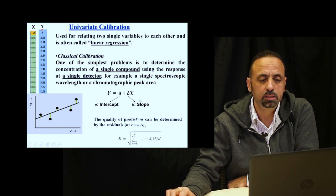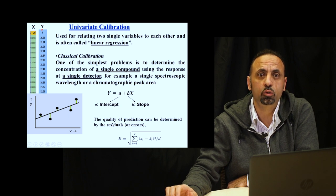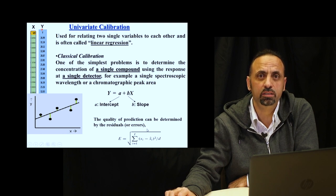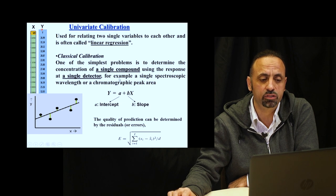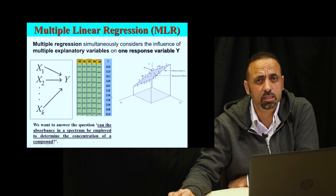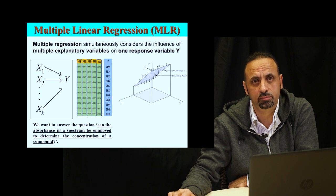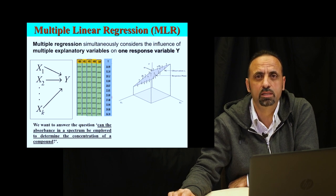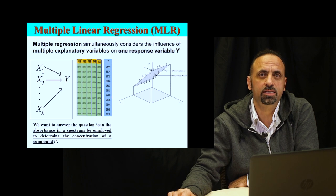The quality of the prediction using this model is the square root of the squared error between the prediction and the actual concentration data. This applies when we have only one variable — only one wavelength, only one detector, only one spectral data point at one wavelength.